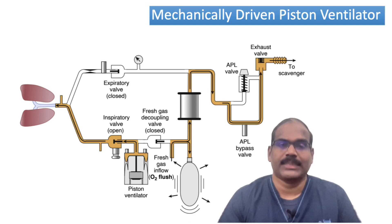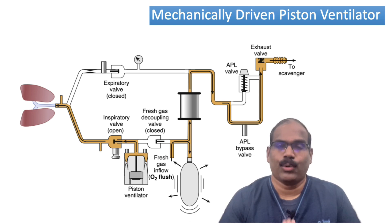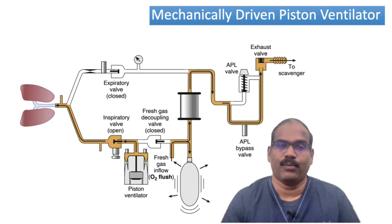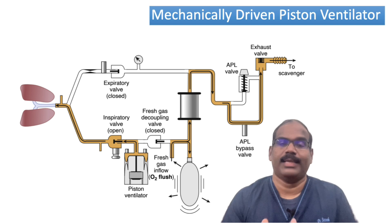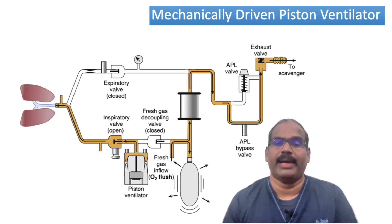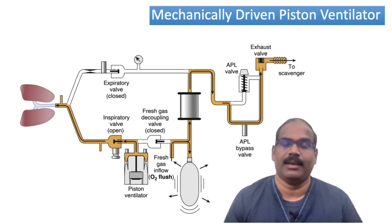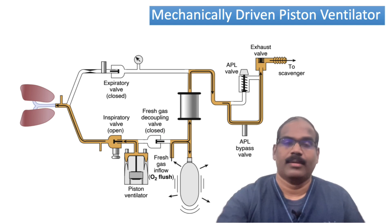Because of the fresh gas decoupling valve, when it is closed during the inspiratory phase, even if auto-flush is pressed, the pressure or excess gas gets buffered by the reservoir bag and is completely cut off from the inspiratory limb going to the airways.